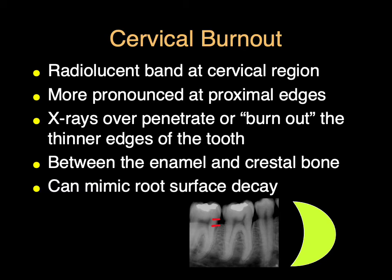One way to differentiate root surface decay from cervical burnout is that burnout does not extend underneath the enamel and stops at the crestal bone — it's a radiolucent area between the enamel and the crestal bone. On this radiograph, there's burnout in multiple places. If the contacts are more open towards the crestal bone, we can get an explorer in; if we feel a cavitation, it might be root surface decay. But often we can't get our explorer in there and have to rely on our radiographic exam to decide if intervention is necessary.